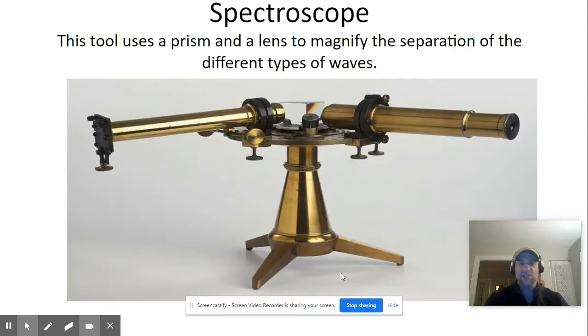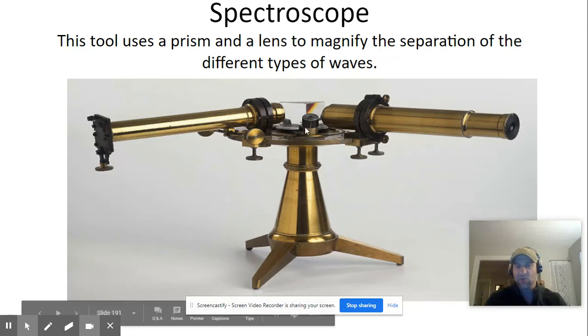When we study stars, we use something called a spectroscope, which is going to magnify the light. And then we will use a prism to separate the light into its various wavelengths of color.